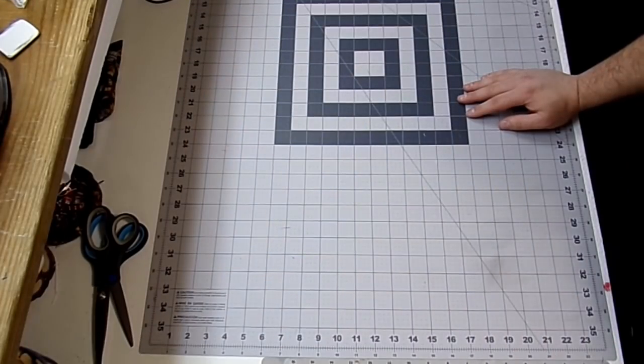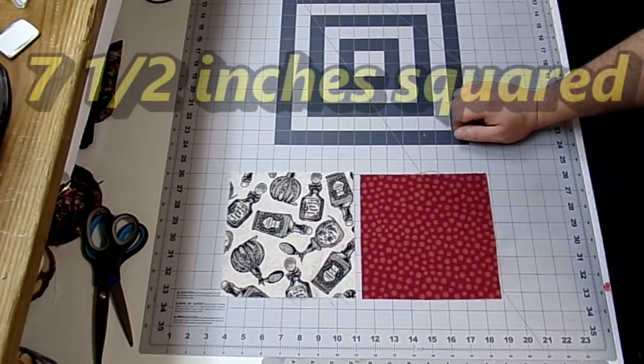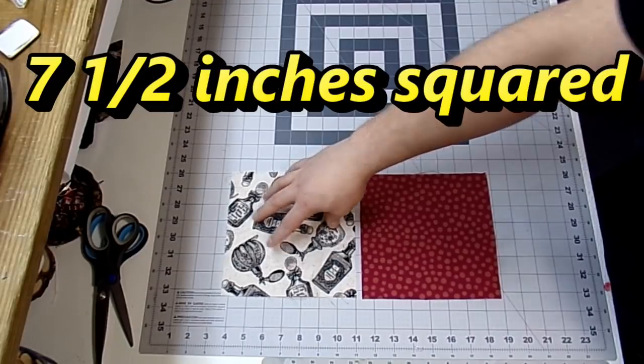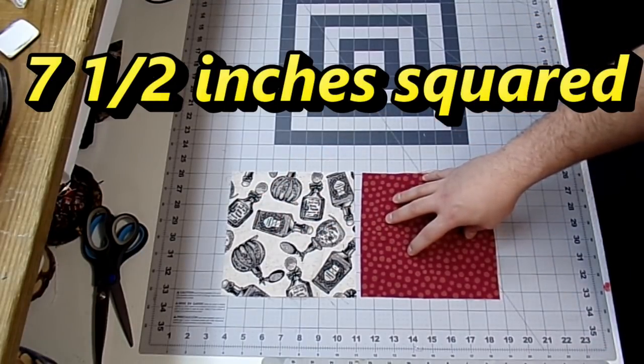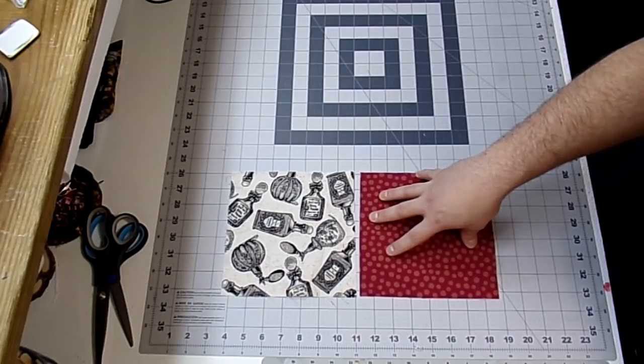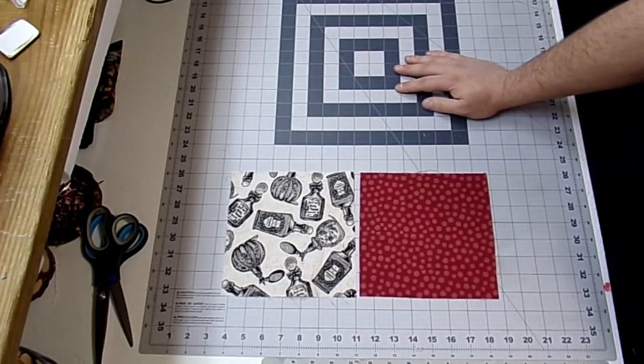So the things you're going to need to make these eyeglass sleeves are two pieces of fabric that measure seven inches squared. This is going to be my outside fabric, and this is going to be my lining. I like to use a nice pop of color in the lining just to give it a little more character.